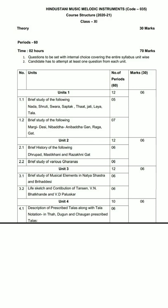In Unit 2 we will learn about the brief history of Dhrupad. Dhrupad is a part of singing in the vocal area. We will cover Masidkhani and Razakhani gat, and various gharanas of music — such as Agra gharana, Delhi gharana, Banaras gharana, Jaipur gharana, and many more. Six marks will be asked from this unit in the exam.